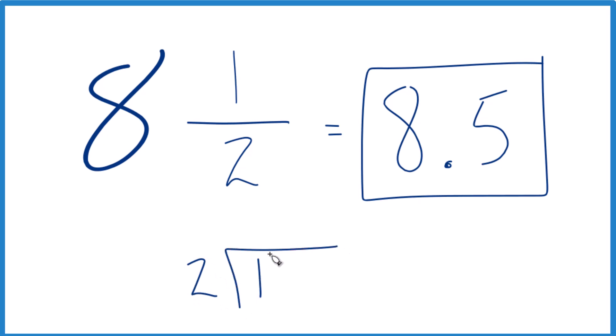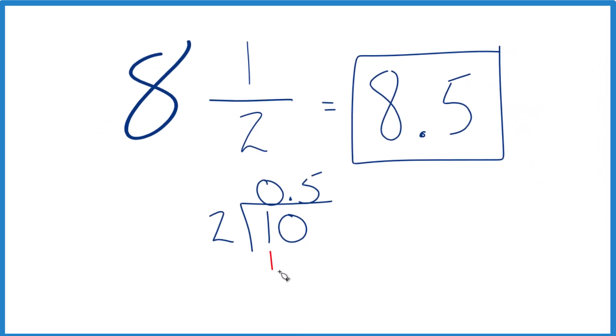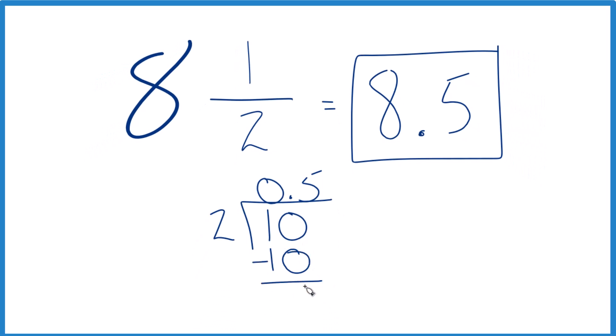2 doesn't go into 1, but if we put a 0 and a point here, we can call this 10. Now 5 times 2, that's 10, 10 minus 10 is 0.